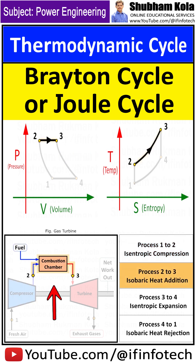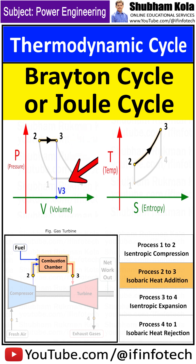Process 2 to 3 is an isobaric heat addition process in the heat exchanger. During this phase, heat is transferred to the gas from an external source at constant pressure. This causes an increase in volume, and since it is a heat addition process, the temperature of the gas increases.